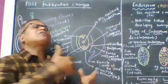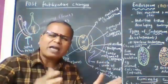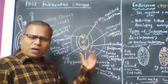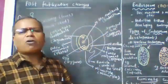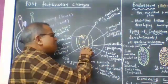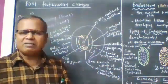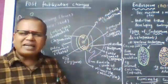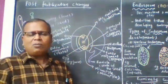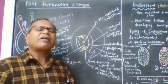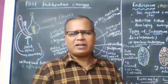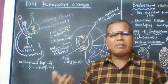The integuments are converted into seed coat. The micropyle of the ovule is retained as the micropyle of the seed. The synergids degenerate and the antipodals degenerate. The secondary nucleus is converted into the primary endosperm nucleus, which then develops into the endosperm.